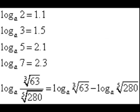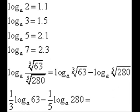Now we will reduce this log into two different logs using the fact that log of a over b equals log of a minus log of b. Remembering that the cube root of 63 is the same thing as 63 to the 1/3 power, then bringing the 1/3 to the front and doing the same thing with the 5th root of 280.